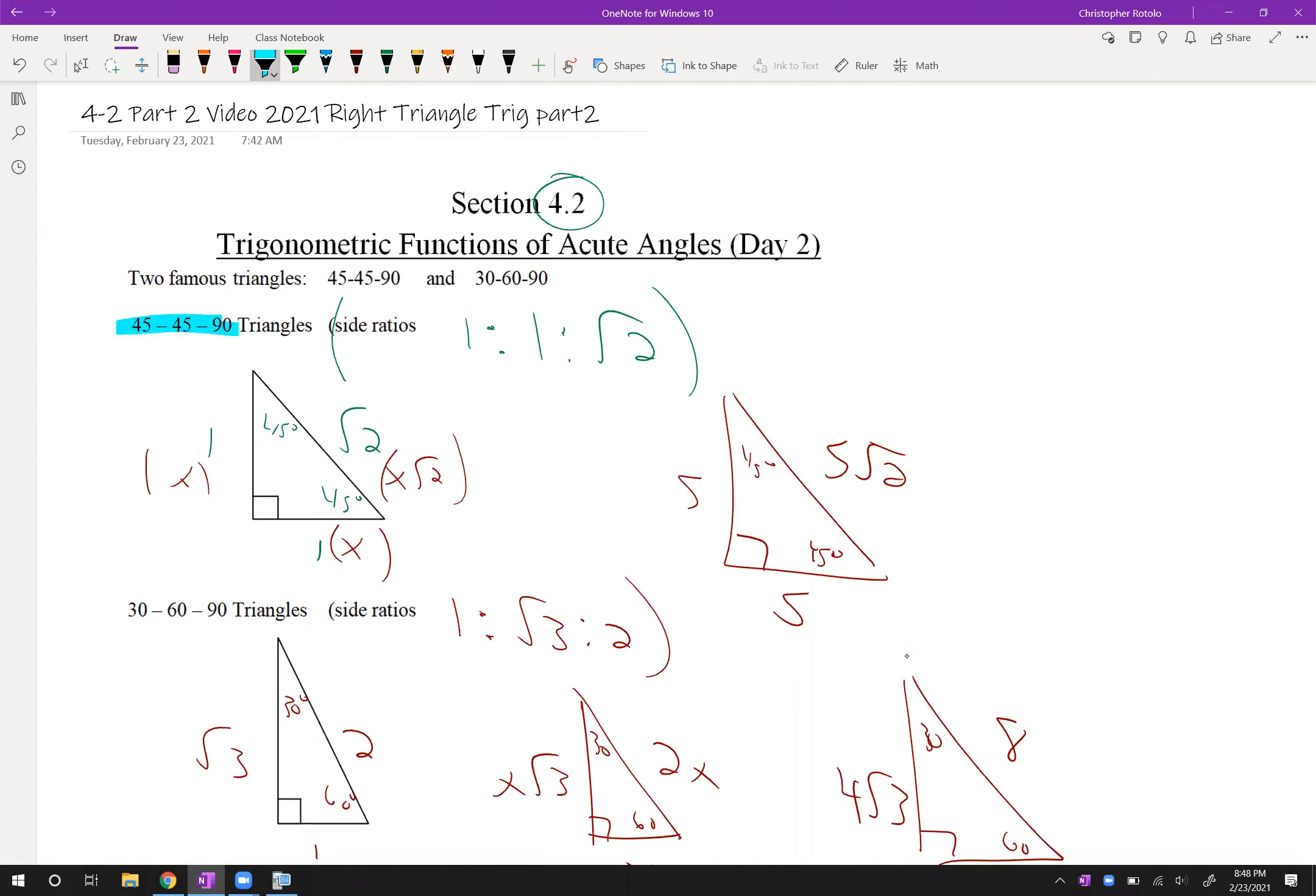I've got a couple sketches on here trying to help you out. 45-45-90, right? That means our sides should be 1, 1, and the square root of 2 to get those things filled in.